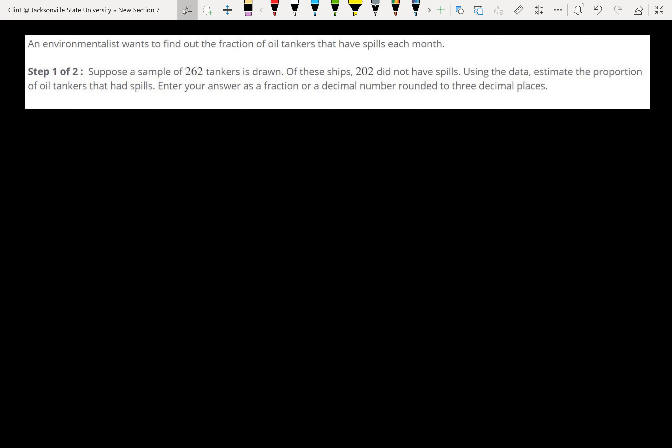It tells us an environmentalist wants to find out the fraction of oil tankers that have spills each month. If we're dealing with a fraction or a percentage instead of a mean, that means we're dealing with proportions. Step one says, suppose the sample of 262 tankers is drawn, of these 202 did not have spills. Using the data, estimate the proportion of oil tankers that had spills, and your answer is a fraction or a decimal number rounded to three decimal places.